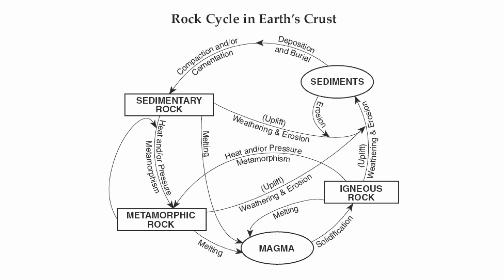Moving on to sedimentary: sedimentary rocks undergo uplift, which means land gets forced upward. That land then gets broken down through weathering, and eroded — meaning transported to a different location. Those rock fragments that get transported are called sediments. Those sediments then get dropped off and buried through deposition and burial, then get compacted, meaning the particles are pressed together, and cemented or glued together to make a sedimentary rock.